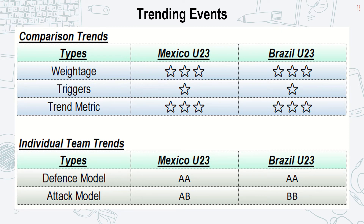Here are the three components briefly explained under comparison trends. Weightage denotes the amount of money being supported by external forces or syndication. Triggers are the amount of reactive data that resulted in the game turning out in some scenarios. For the trend metric, it explains that some teams will not compete as to gain an edge on some monetary gains.